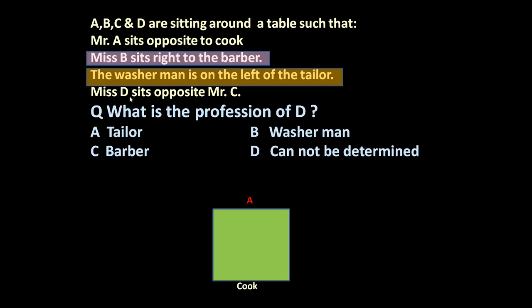Next statement is Miss D sits opposite to Mr. C. It means C and D they are sitting opposite to each other. So they cannot occupy this position because A is here. So C or D cannot occupy this position. C and D will be here. If C is here, D will be here. If D is here, C will be here. So C and D they are opposite to each other.